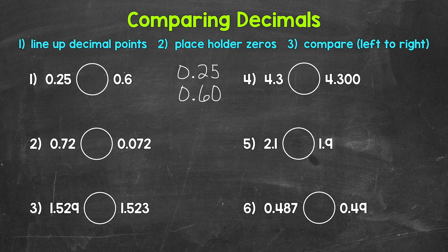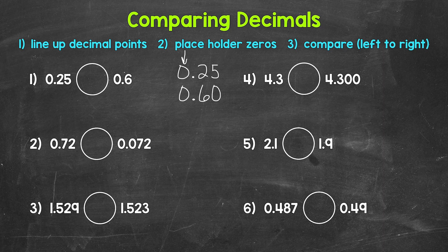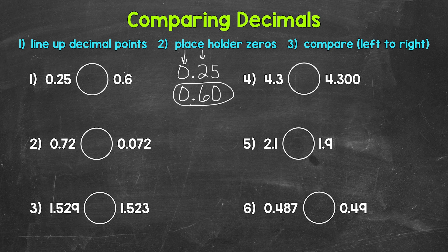It can also help us compare. Once we have our decimal points lined up and we use placeholder zeros, we compare digits from left to right, going place by place. We start at the furthest place to the left because that's the greatest place value and work our way right. Starting to the left, we have zeros in the ones place, so no whole numbers. We move to the tenths place, where we have a two and a six. Six is greater than two, so this is greater. The tenths place is a greater place value than anything to the right, so any digits to the right do not impact this comparison.